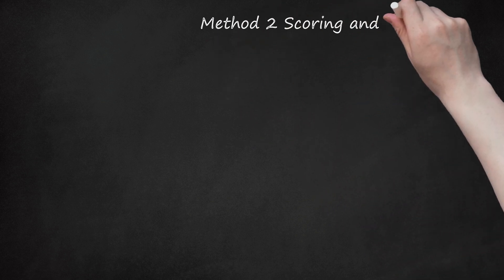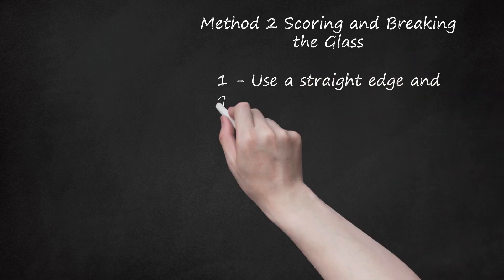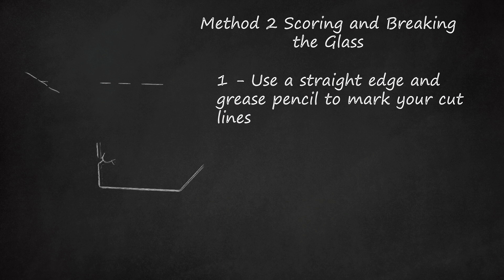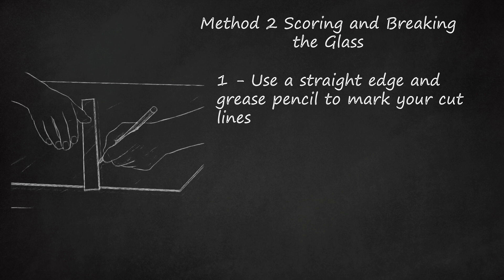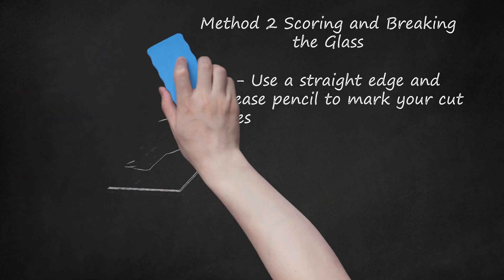Method 2: Scoring and Breaking the Glass. Use a straight edge and grease pencil to mark your cut lines. A clean, successful break depends on precise measurements and accurate cut lines. Use a straight edge to designate where you want the glass to be cut. Use a grease pencil or sharpie to draw the lines on the glass where you want to cut it. The cut lines will be your guide for scoring. You will use a glass scoring tool to trace over the cut lines. Be sure your cut lines start at one edge of the glass and end at another.